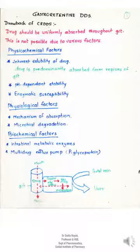All of us know that the oral route of drug delivery is still the most preferable route because of ease of dosing, patient compliance, and flexibility in formulation. In order to decrease the frequency of oral dosing and to maintain almost steady-state plasma levels, controlled release systems have been designed which help in releasing the drug over a long period of time.